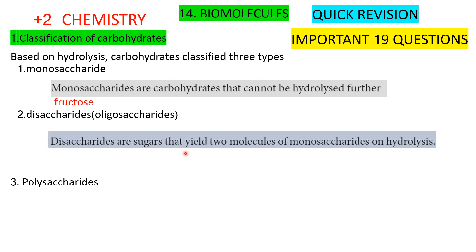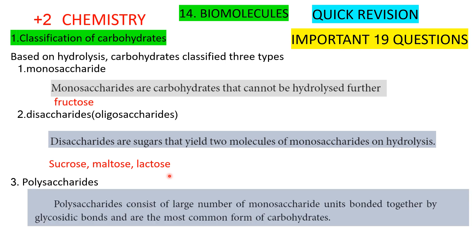Disaccharides yield two molecules of monosaccharides on hydrolysis. Examples: sucrose, maltose, lactose. Polysaccharides consist of a large number of monosaccharide units bonded together by glycosidic bonds. Glycosidic bonds are where monosaccharide molecules are united — these are the most common bonds in carbohydrates. Examples: starch and cellulose.